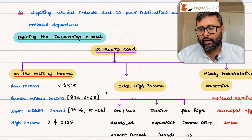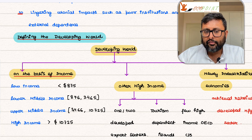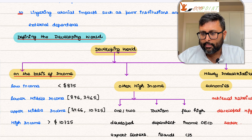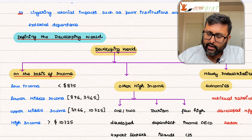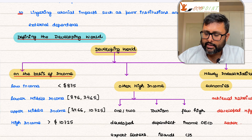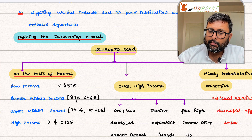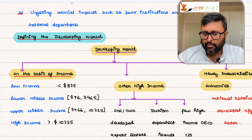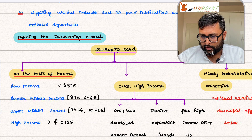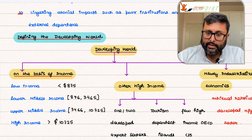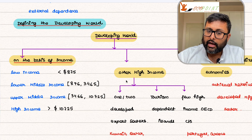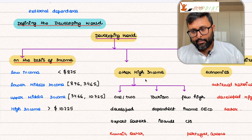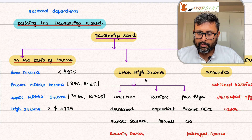The question is how do you define the developing world? One way is on the basis of income, as the World Bank has defined. There are lower income countries with per capita income less than $875, lower middle income countries with per capita income between $876 and $3,465, upper middle income countries, and high income countries with per capita income more than $10,725. Even among developing nations, there can be a few high income countries.